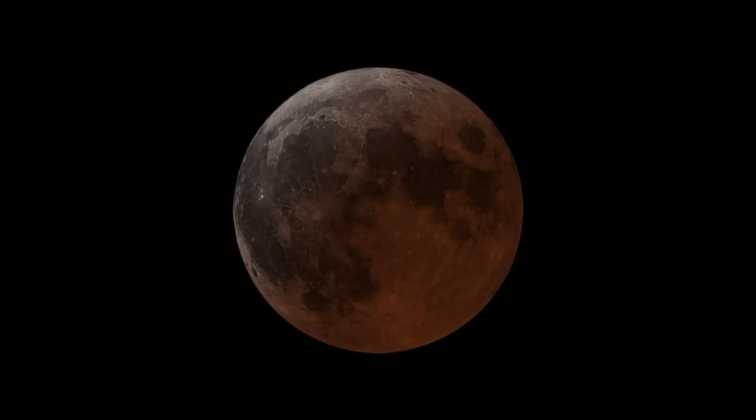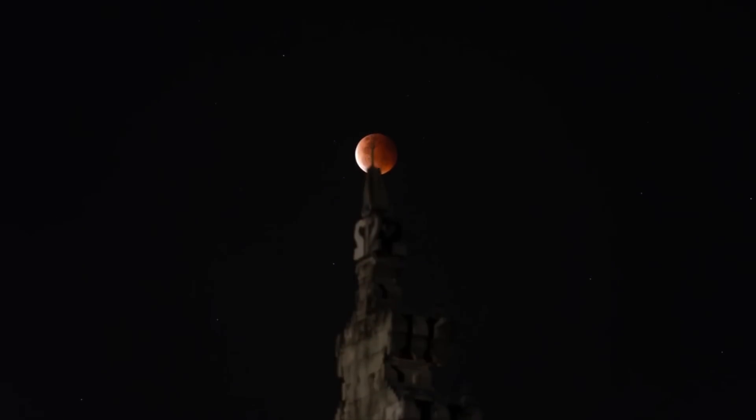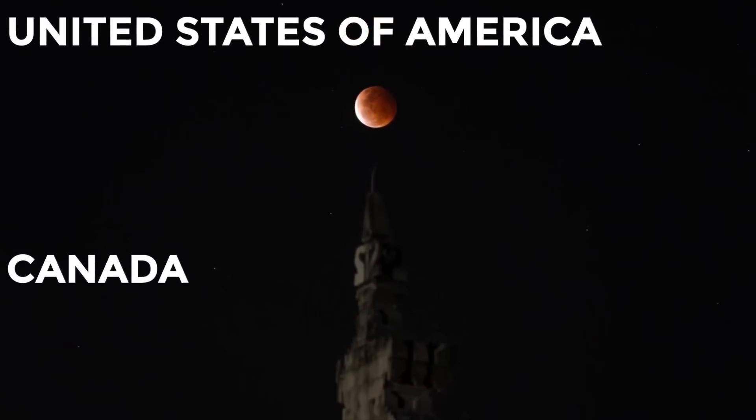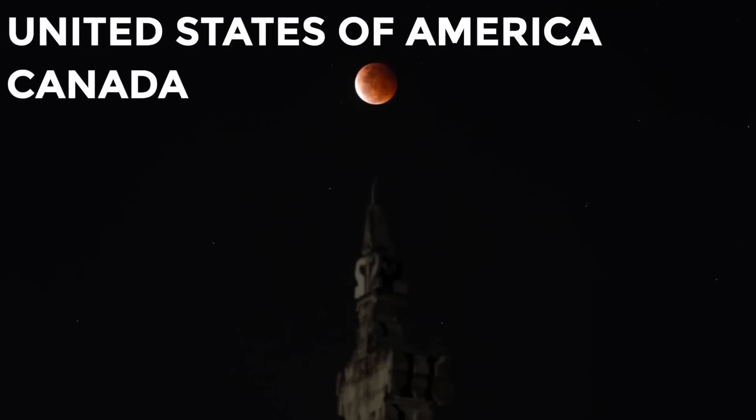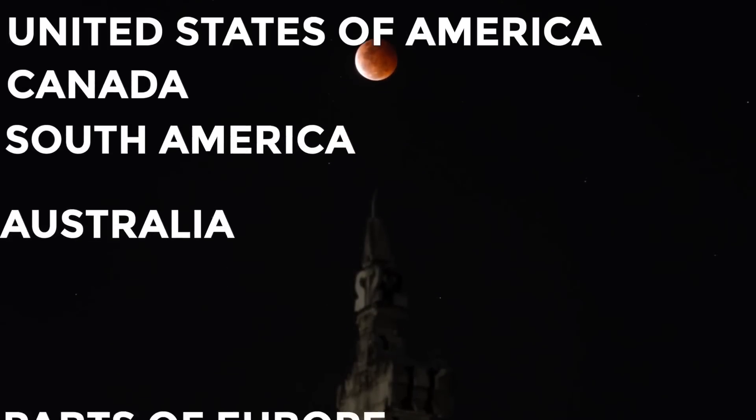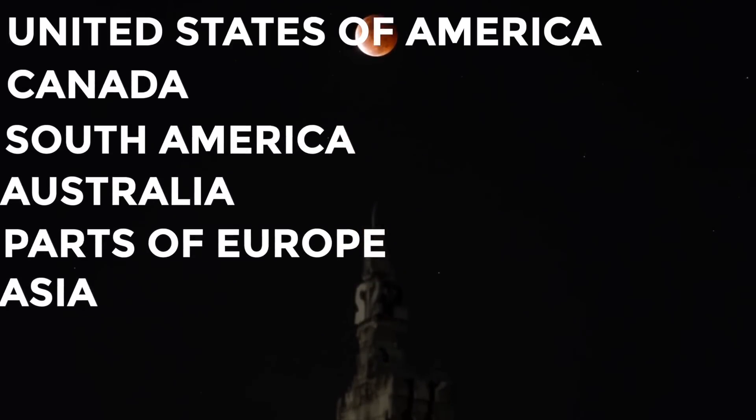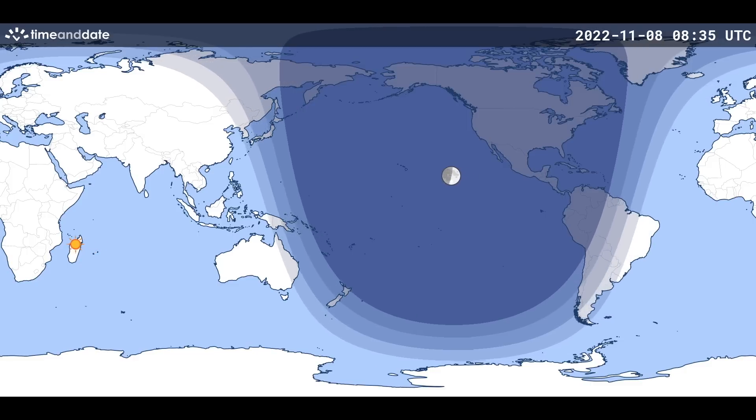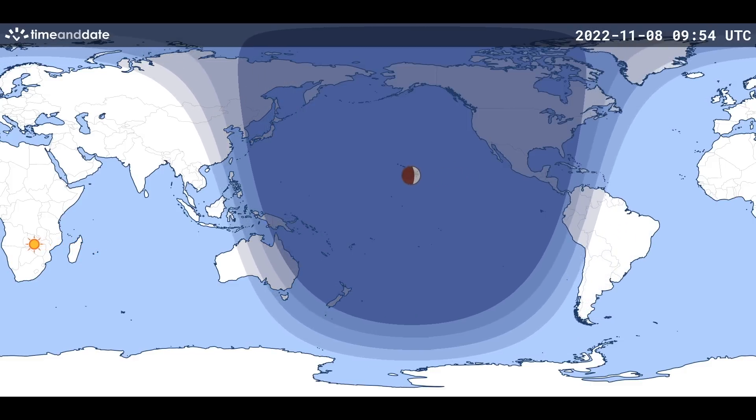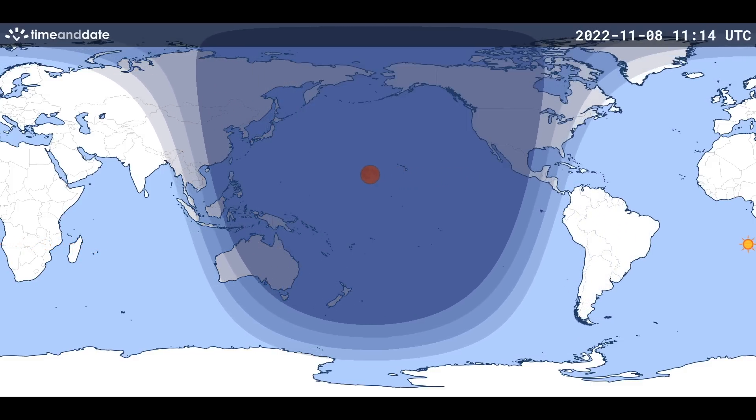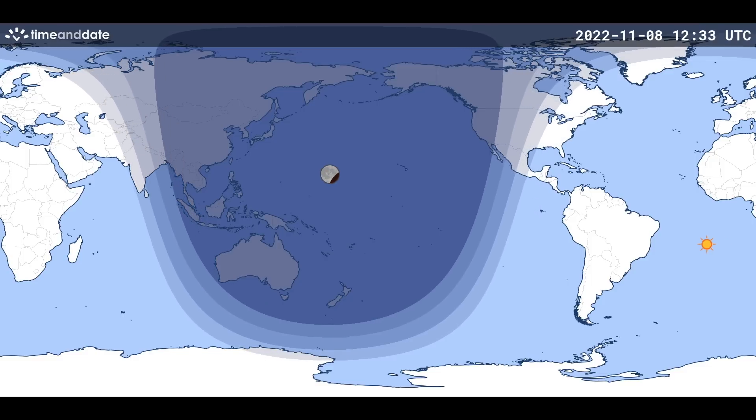Now the moment you all have been waiting for. Let us now look at the places where this year's total lunar eclipse will be visible. The lunar eclipse will be visible in most parts of the world including the whole territory of the United States and Canada, the entire continent of South America, Australia and some parts of Europe and Asia. Here is an animation to help you visualize the path of the eclipse. As we can see most of the eclipse will occur in the region of the Pacific Ocean.